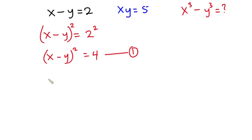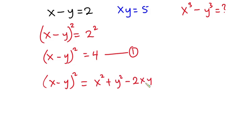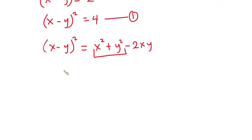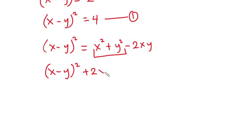Now considering the left hand side of equation 1, we have x minus y all squared. If we expand this, we have x to the 2nd power plus y to the 2nd power minus 2xy. Now let's make x squared plus y squared the subject. We get x minus y all squared plus 2xy is equal to x squared plus y squared.